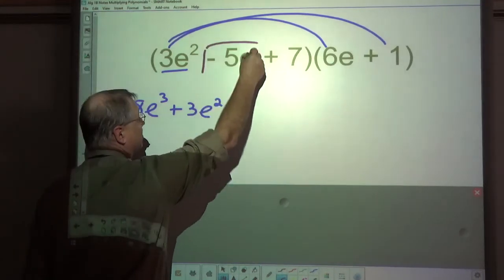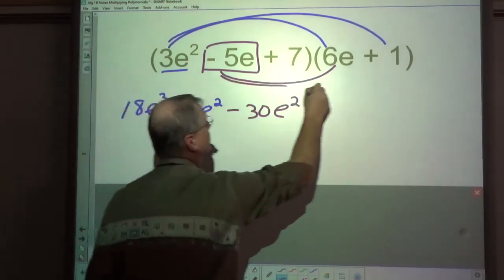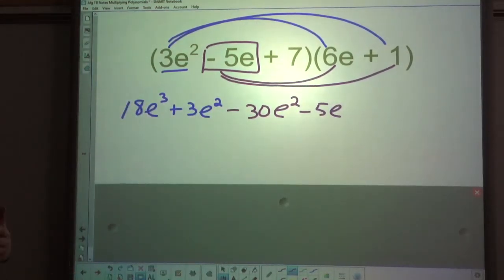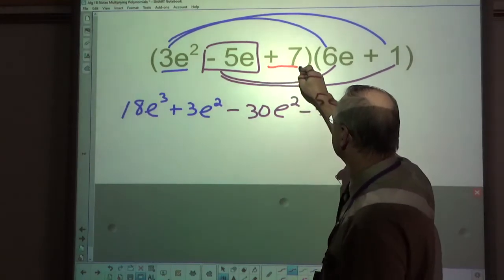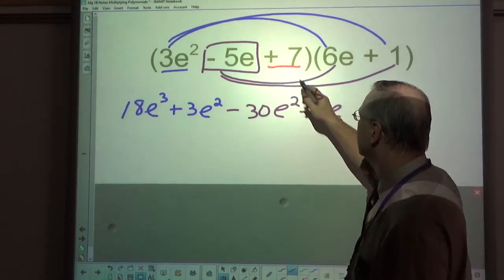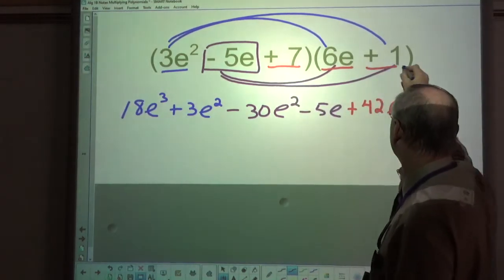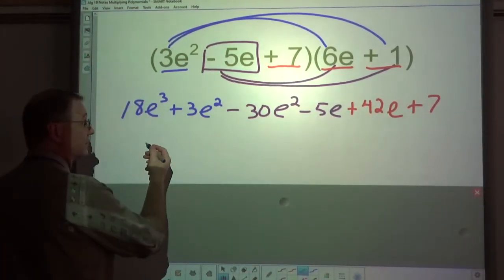Now I'm going to take the negative 5e and distribute it. Negative 30e to the second minus 5e. Now once you get here, if you start to draw more lines for the 7, you're going to get something that pretty much looks like spaghetti, especially if you're drawing the lines with just a pencil. So instead, what I do is I underline what I'm multiplying as I go so that it helps me keep track of it. So 7 times 6e is a positive 42e. 7 times 1 is 7. Now all I need to do is add these up, the ones that are like terms.